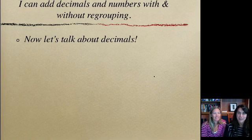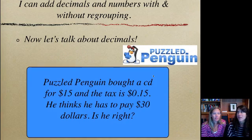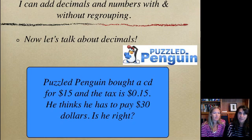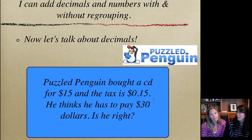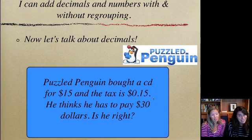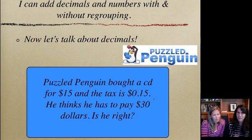So now, we need to talk about decimals and how we're going to add up numbers with decimals. So we have our friend, the Puzzled Penguin. And he does look very confused right now. Because he bought a CD for $15 and the tax is 15 cents. So he thinks he has to pay $30. Is he right? What do you think? What do you guys think? I don't know. I understand why he would say $30. Because $15 and $15 is $30. But, I mean, use your common sense. If you're paying $15, it's only $15. It's not going to get you to $30. So he's not right.